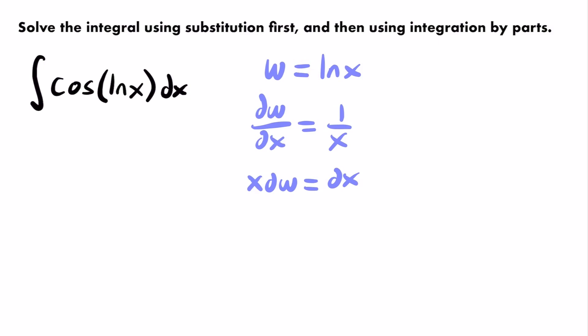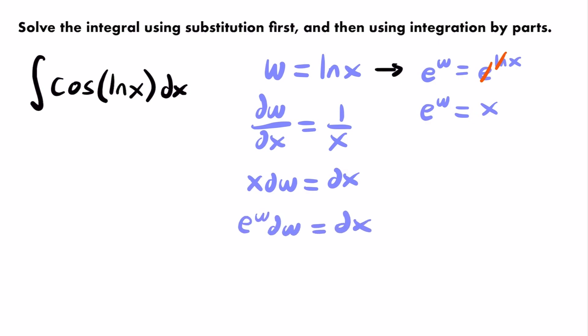We have e to the power of w equals e to the power of the natural log of x. Since e and the natural log are inverse functions, they cancel, leaving us with x. So x equals e to the power of w. Substituting back, dx equals e to the power of w times dw — dx is now fully expressed in terms of w.